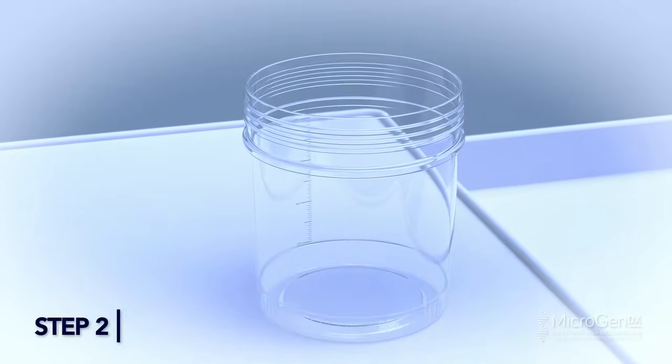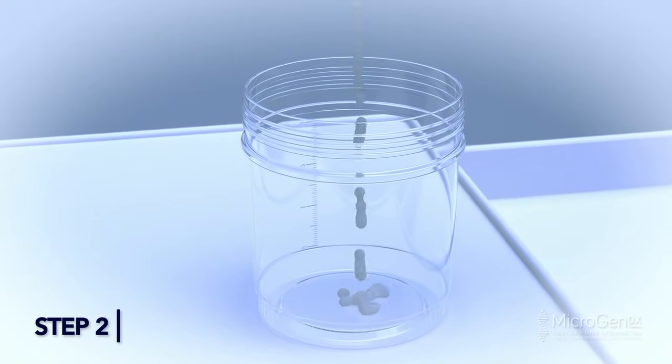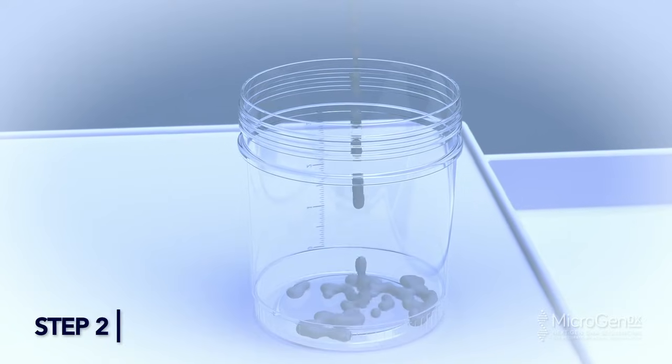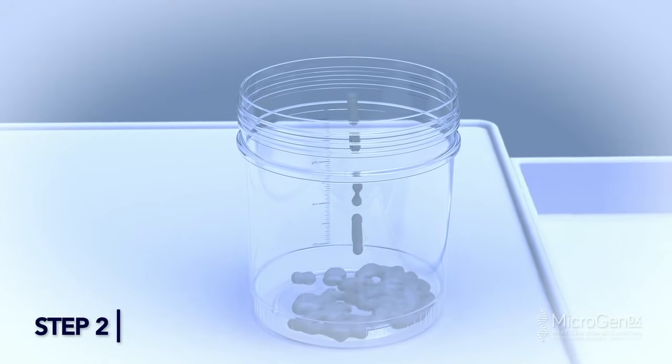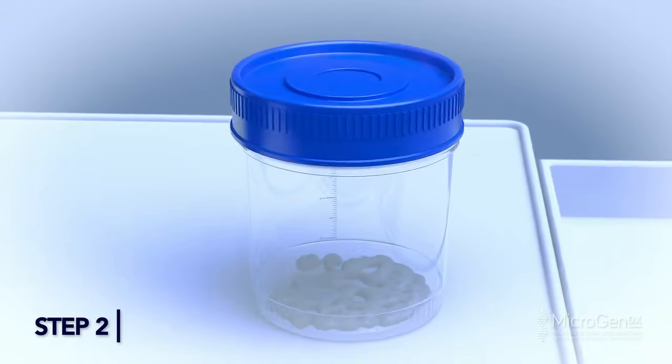Step 2: Collect semen excretion into sterile container. If enough excretion is collected, more than a pea-size amount, cap and seal the container and prepare for shipping.